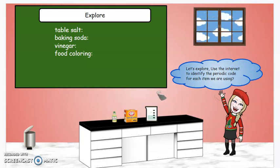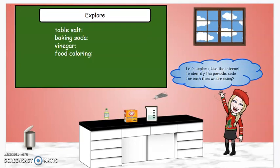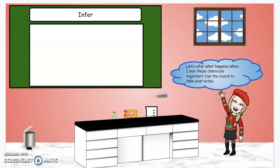They have to use the internet to identify each periodic code for the items that they're going to use. The next one, we will infer what will happen when they mix the chemicals together.